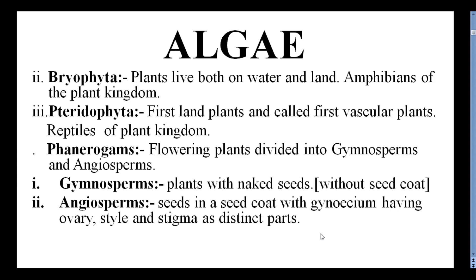In between Cryptogams and Angiosperms are the Phanerogames — the flowering plants — which are divided into Gymnosperms and Angiosperms. Gymnosperms are plants with Naked Seeds, meaning the seed coat is absent. Angiosperms have seeds with a seed coat, and the female reproductive organ called Gynoecium has three parts: ovary, style, and stigma.